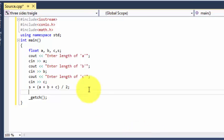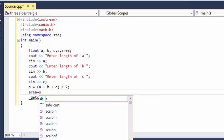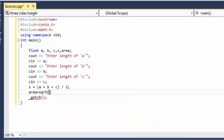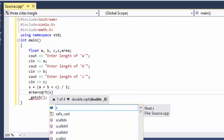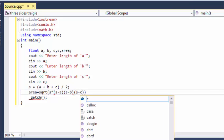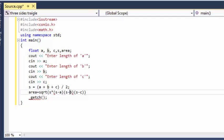Now we need the area. In order to calculate the area, we know there is a formula: square root of s times (s minus a) times (s minus b) times (s minus c). So we are done with the calculation.